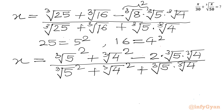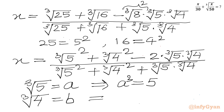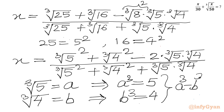Now we will consider cube root 5 equal to a, and cube root 4 equal to b. So a cubed equals 5 and b cubed equals 4. From these two equations we get a cubed minus b cubed equal to 5 minus 4, which equals 1.